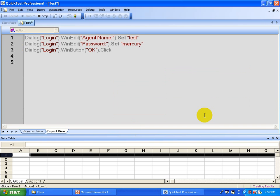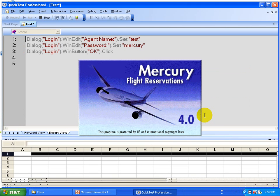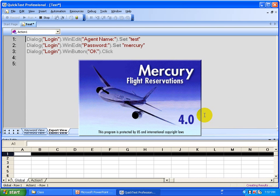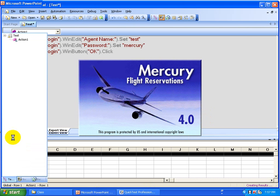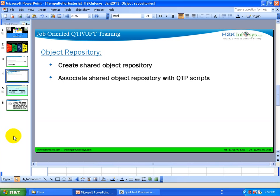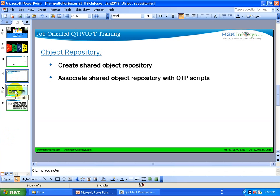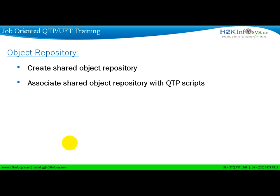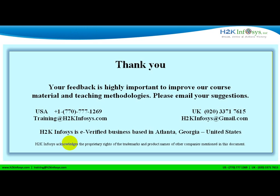So that's how you can create a shared object repository, associate it to your script, and do scripting from the objects in the repository. To summarize: an object repository is basically a memory file that holds the objects and their properties. Whenever you run the script, QTP retrieves that object information from the OR file to understand and identify the object. Thank you for your time and for watching these videos. I'll create more videos on other functionality coming up, so please keep in touch.